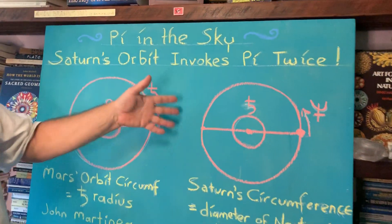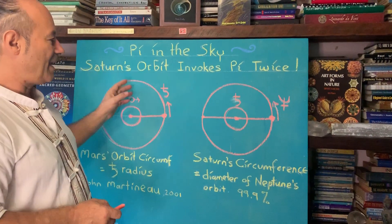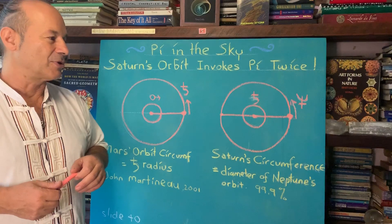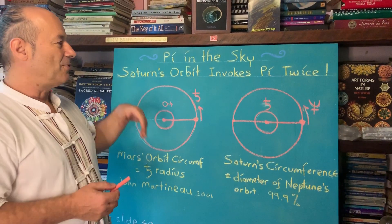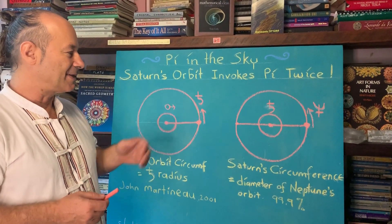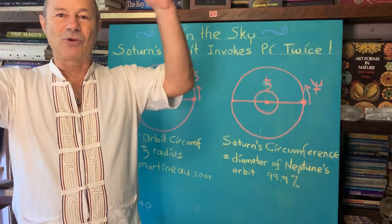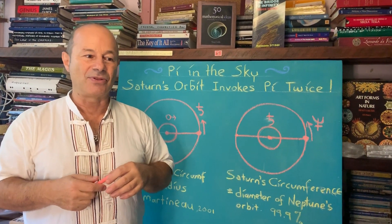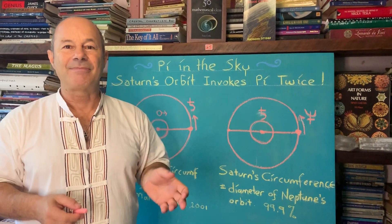This is another classic example shown in John Martineau's book of how the planets all exhibit fantastic proportions. It's not just necessarily Pi — it can also be the golden ratio or some of the square root harmonics. It's a great way to link what we call heaven and earth, or the celestial transcripts. They all obey a divine mathematical code.